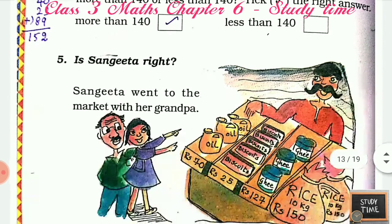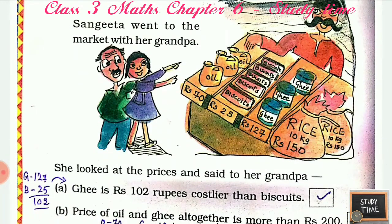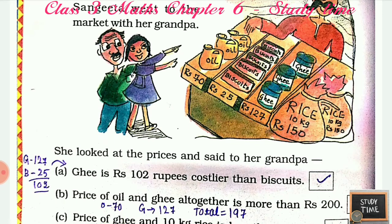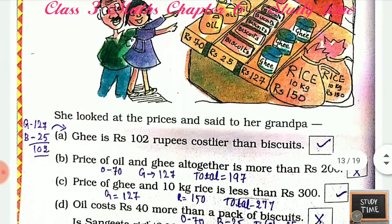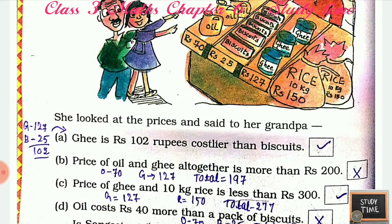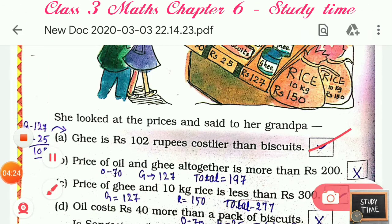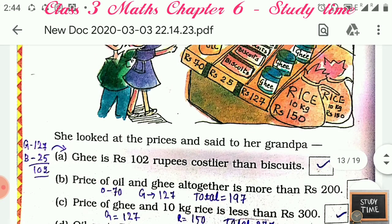This is Sangeeta, who went to the market with her grandpa. There are a few items — oil, biscuits, ghee, and 10 kg rice at rupees 115. She looked at the prices and said to her grandpa: ghee is rupees 102 costlier than biscuits. Ghee is 127 and biscuits is 25; if you subtract you get 102, so that is correct. Price of oil and ghee altogether — is it more than 200? 70 plus 127 is 197, so it is not more than 200.